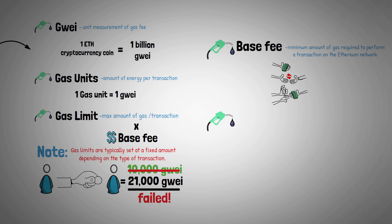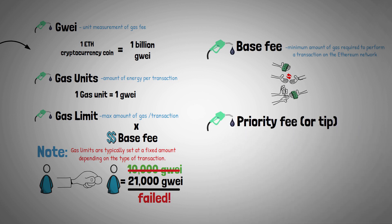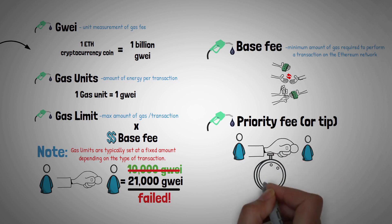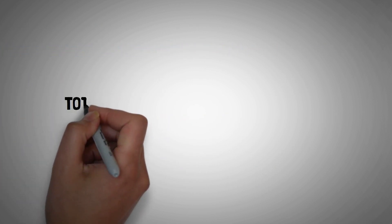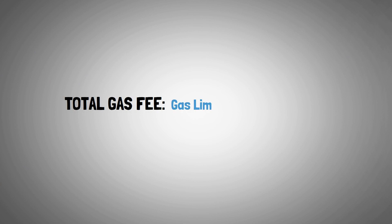Lastly, we have priority fee, or tip: an extra fee that you can choose to pay in order to validate your transaction request sooner. It's like giving a tip to the taxi driver to ensure a smooth ride. Now that you understand all the terms, the formula to calculate your total gas fee is: gas limit × (base fee + tip).